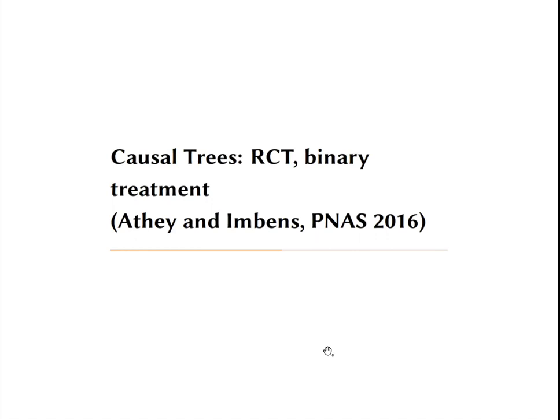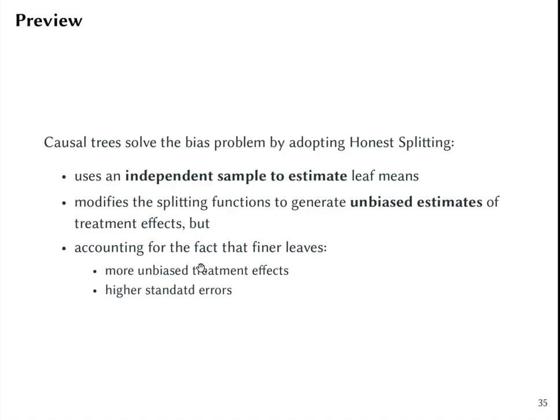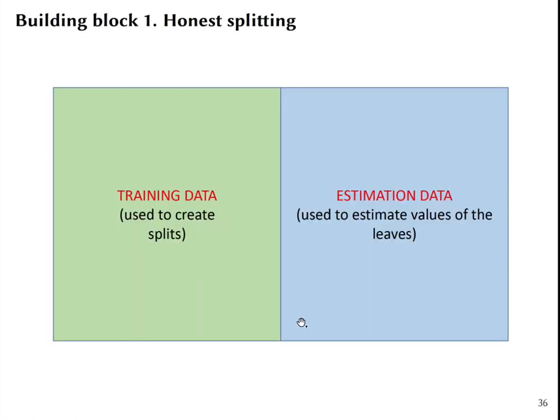The machinery for causal trees was developed by AFI and Imbans in the setting for RCTs with binary treatment. Causal trees are different from decision trees in several ways.